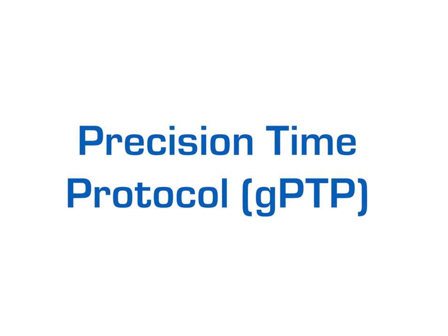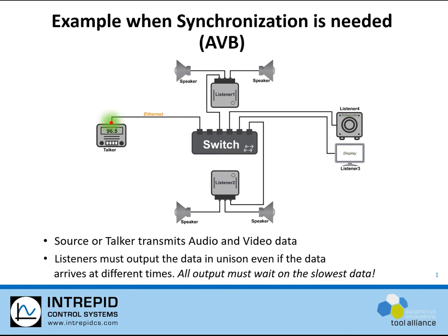Ethernet is the most common type of network in use today. When transferring data from a source to multiple destinations, the data will reach those multiple destinations at varying times. This is due in part to complex buffering and logic that happens inside of an Ethernet switch. There are many use cases in networking where the data must be used or presented in unison by multiple nodes across the network — one example is audio and video data. If data reaches multiple destinations at different times, how do the multiple nodes on a network coordinate their activities in time?